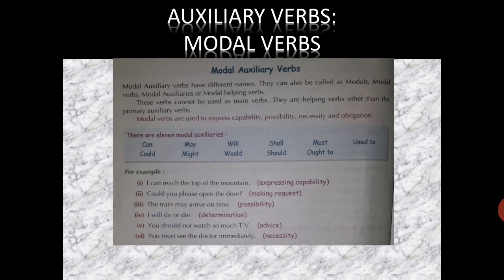Now talking about auxiliary verbs — the second kind, modal verbs. Modal auxiliaries are also called modals or modal helping verbs. These cannot be used as main verbs; they are supporting verbs that help the main verb. They are used to describe or express capabilities, possibilities, chances, necessity, and obligation. There are 11 modal auxiliaries: can, could, may, might, will, would, shall, should, must, ought to, and used to. These will be discussed in a separate chapter on modals.